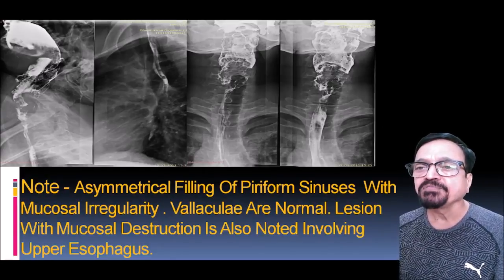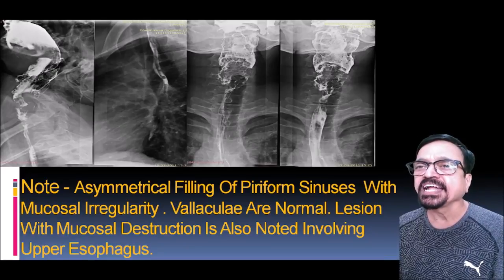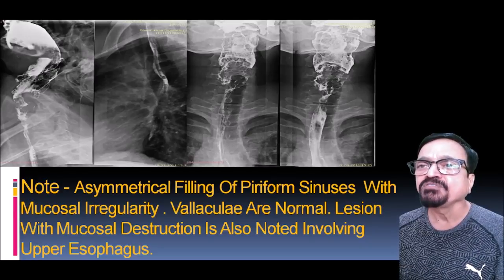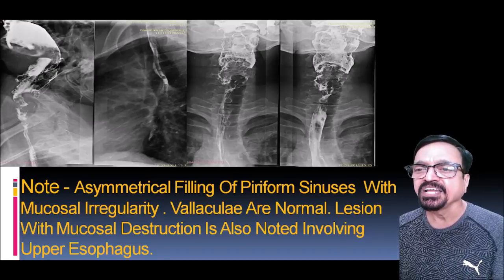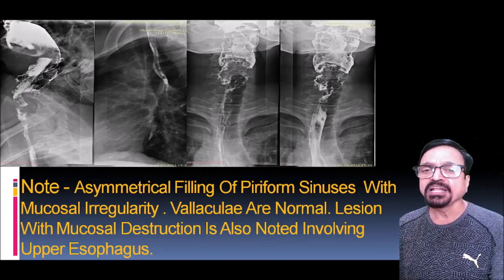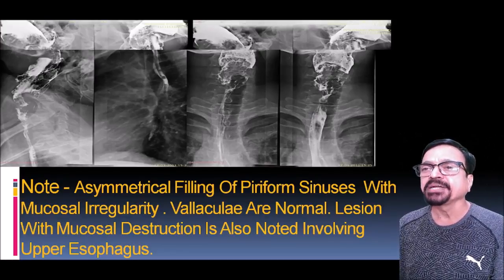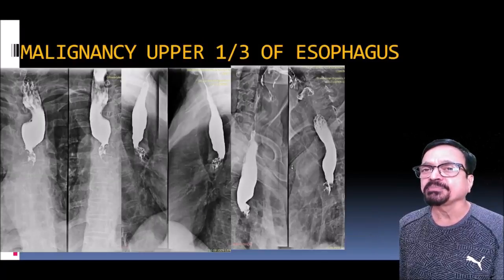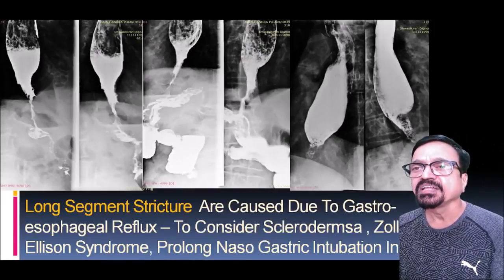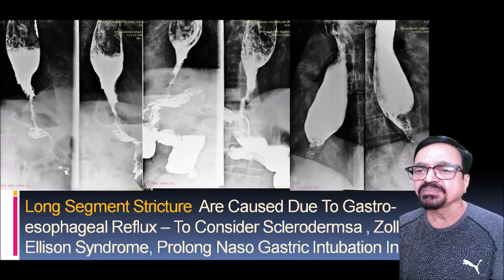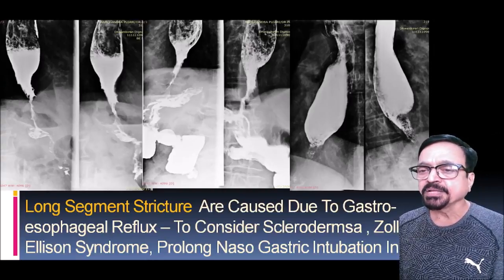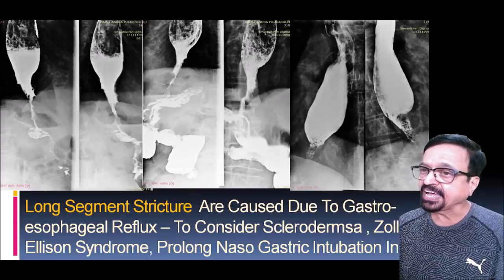Here, the pyriform sinuses are asymmetrically filling — there is mucosal irregularity in one pyriform sinus. Valleculae are well-filled and emptying normally, but the pyriform sinuses show a filling defect on the left side. Asymmetrical filling of pyriform sinuses with mucosal irregularity, and a lesion with mucosal destruction involving the upper esophagus — malignancy is top of the list. Differential for long-segment strictures includes scleroderma, Zollinger-Ellison syndrome, and prolonged nasogastric intubation.